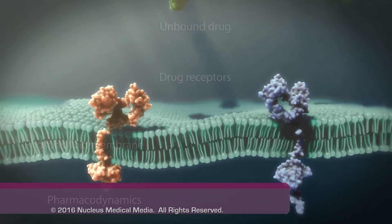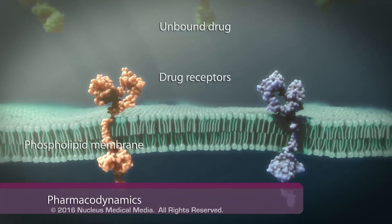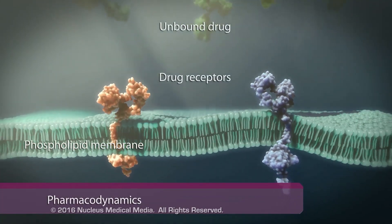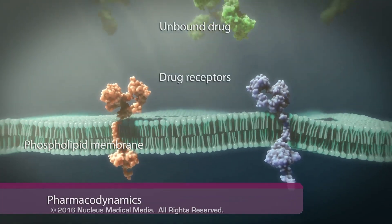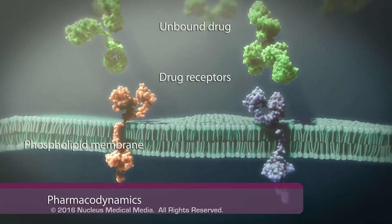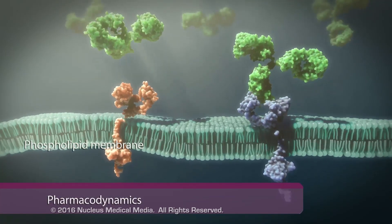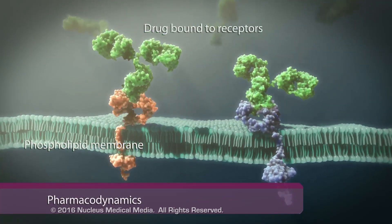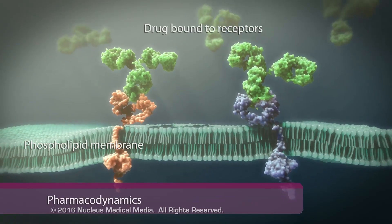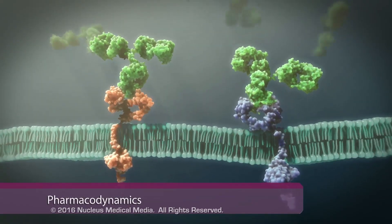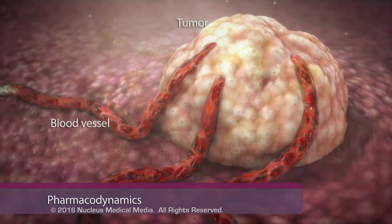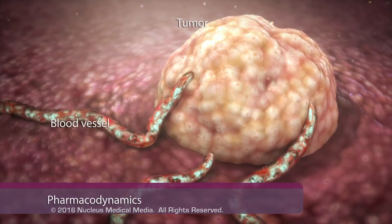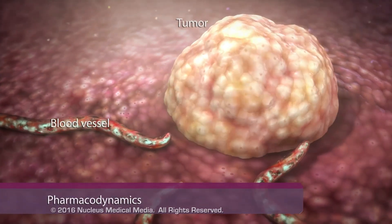Pharmacodynamics determines how unbound drug affects the biochemical and molecular interactions of its target macromolecules. This includes activation or inactivation of its target macromolecule, and the specific physiological effects this produces within the body.